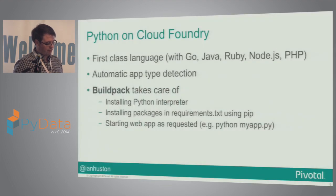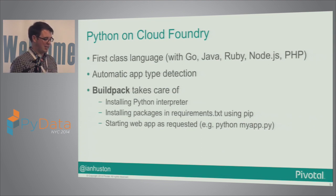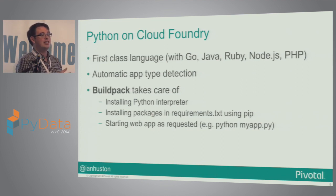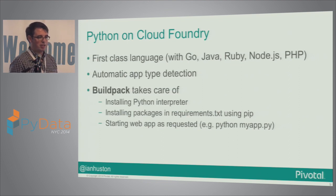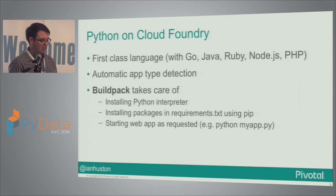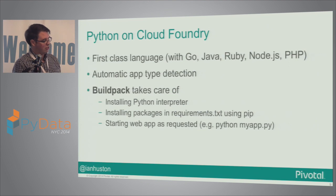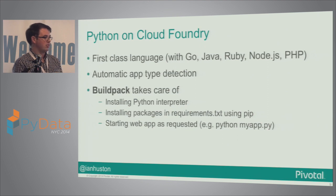Python is actually a first class language on Cloud Foundry, along with Go, Ruby, Java, Node.js, and even PHP. The official system automatically detects if you have a Python application — you don't need to tell Cloud Foundry. It looks for a requirements.txt file or .py extensions in your directory and decides this is a Python application. It goes and installs a Python interpreter, uses pip to install your dependencies, and then starts the application as requested. If you're using Flask, you can just put in Python myapp.py and that's how the server will be started.